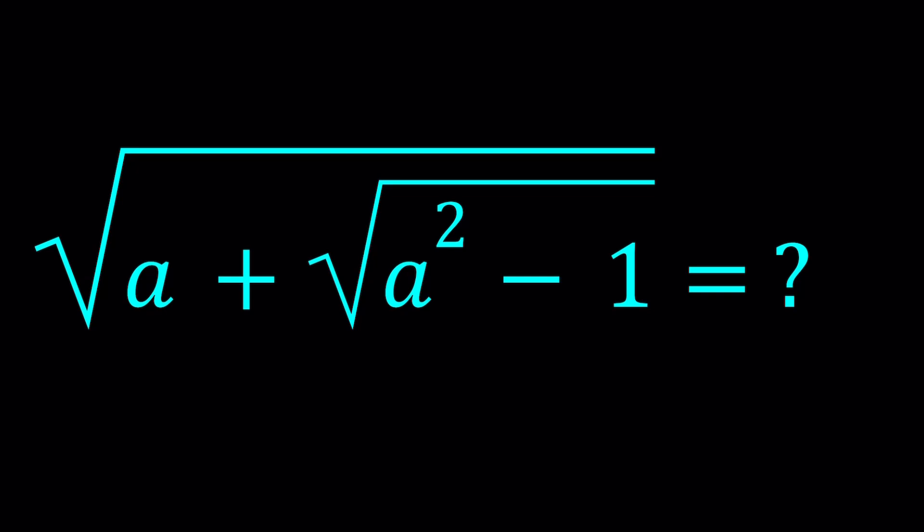Suppose a is equal to 4. Then we get something like the square root of 4 plus the square root of 15. Can we simplify this? Yes. We can write this actually as the square root of 10 plus the square root of 6 divided by 2. In other words, this expression can be denested.